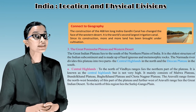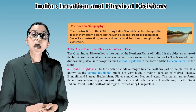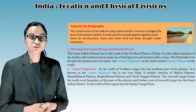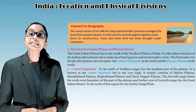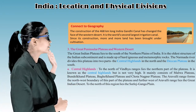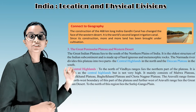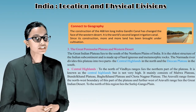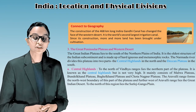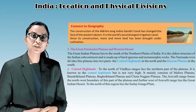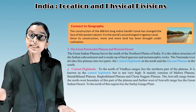Connect to geography: The construction of the 468-kilometer-long Indira Gandhi Canal has changed the face of the western desert. It is the world's second largest irrigation canal, and since its construction more land has been brought under cultivation. The Great Indian Plateau lies to the south of the northern plains. It is the oldest structure of the Indian subcontinent, made up of hard igneous and metamorphic rocks. The Narmada River divides this plateau into two parts: the Central Highlands in the north and the Deccan Plateau in the south.